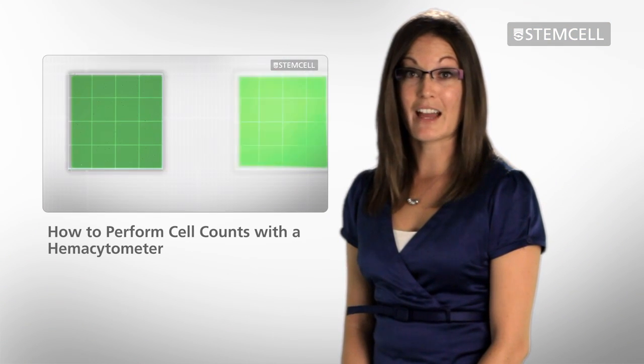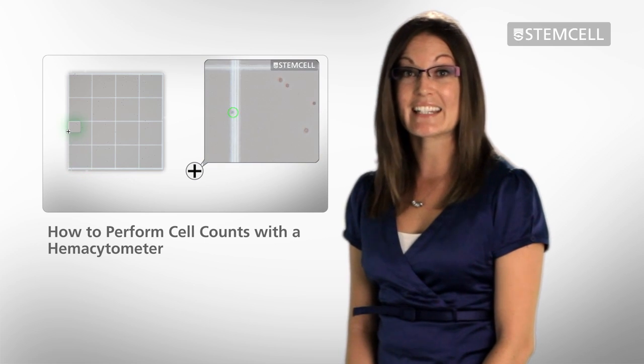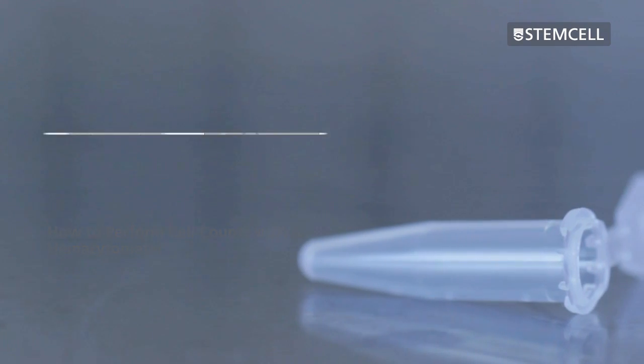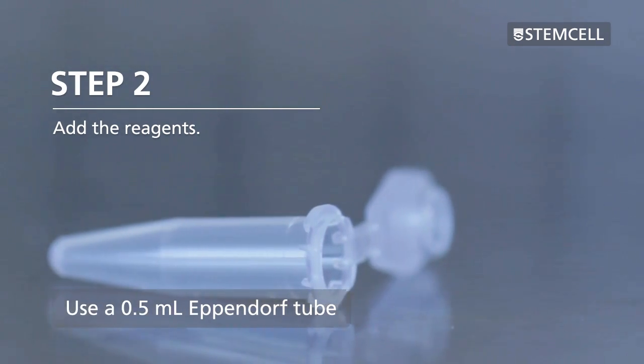For more information about cell counting, please see our technical video for performing both a nucleated and viable cell count. For the HetaSep small volume protocol, use a 0.5 ml Eppendorf tube.